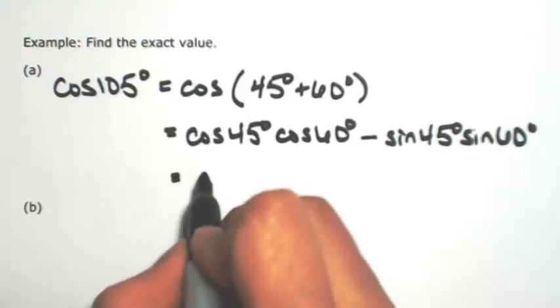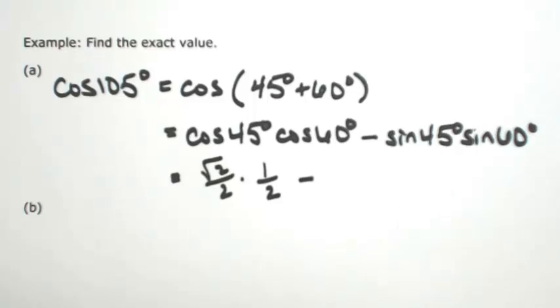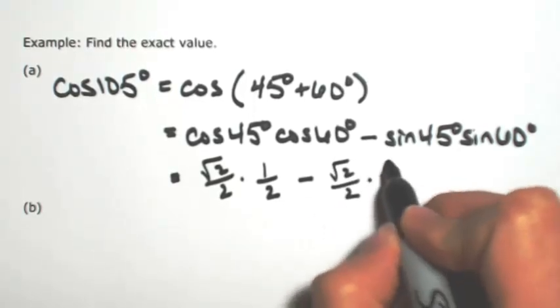Okay, these are ones we know. Cosine of 45 degrees is square root of 2 over 2. Cosine of 60 degrees is 1 half. Sine of 45 degrees is square root of 2 over 2. Sine of 60 degrees is square root of 3 over 2.